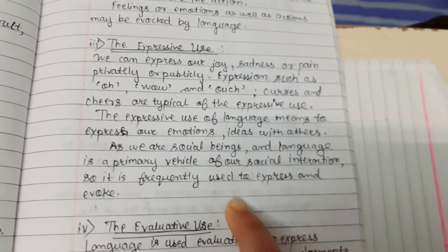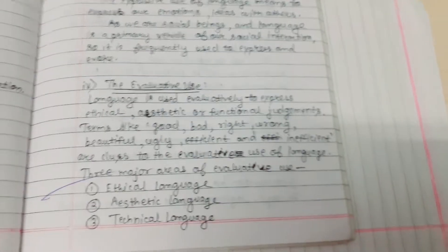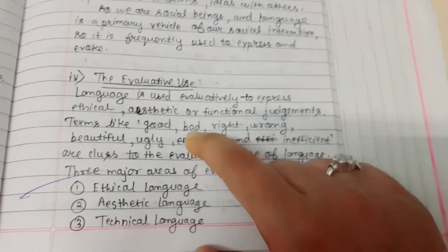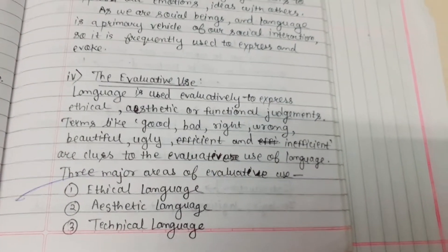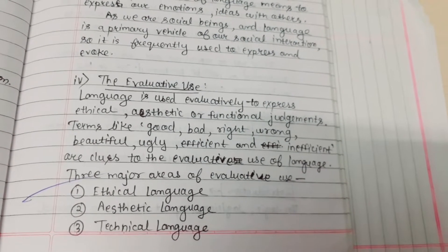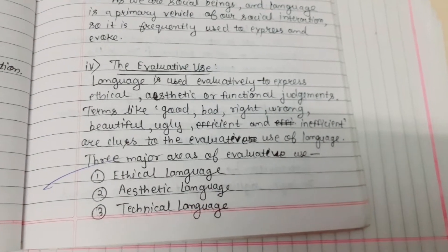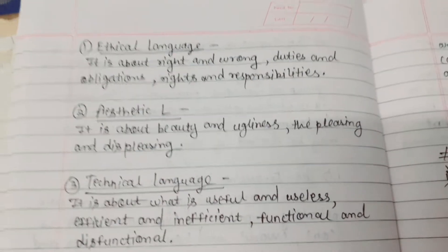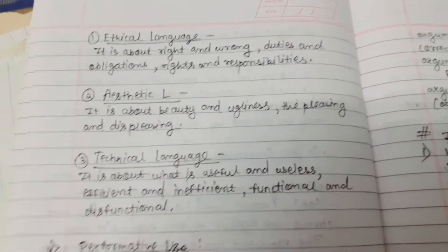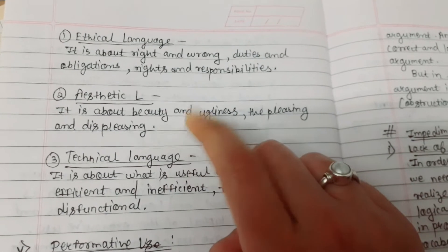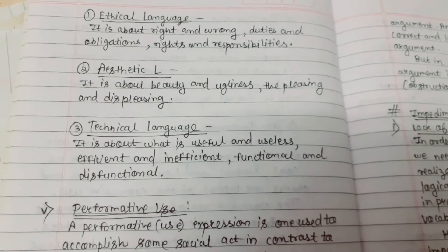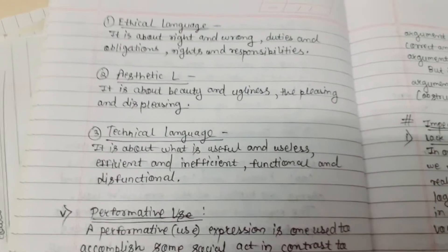Language is frequently used to express and evoke. Fourth is evaluative use — here the language is used evaluatively to express ethical, aesthetic, or functional judgment. Terms like good, bad, right, wrong, beautiful, ugly, efficient, and inefficient are clues to the evaluative use of language. The three major areas are: ethical — about right and wrong, duties and obligations, rights and responsibilities; aesthetic — about beauty and ugliness, the pleasing and displeasing; and technical — about what is useful and useless, efficient and inefficient, functional and dysfunctional.